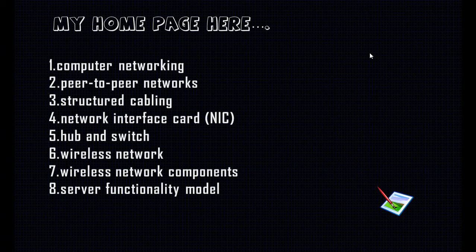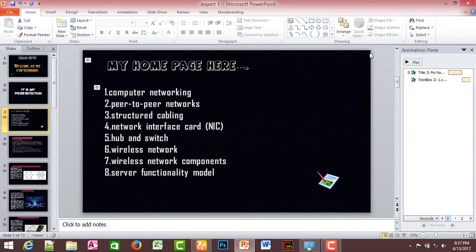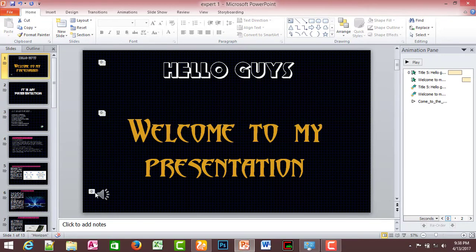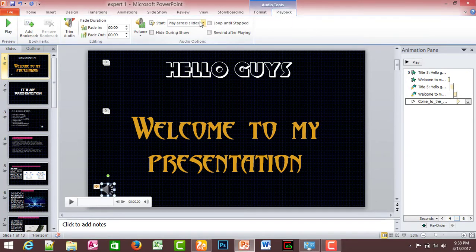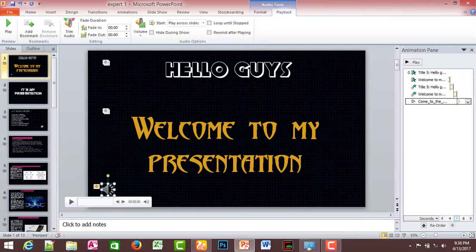After the action, you can make the animation start automatically — Start With or After Previous. For action buttons and hyperlinks, keep in mind these will not apply in the same way. The music playback option is set in the background. Enable Hide During Show, and when you right-click the mouse button, you will see the right-click menu.